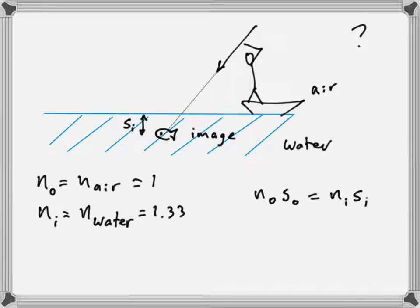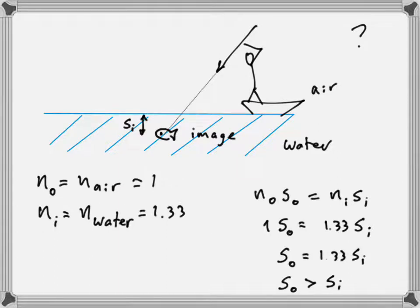Applying the equation n_o × s_o = n_i × s_i, with n_o = 1 and n_i = 1.33, we get: 1 × s_o = 1.33 × s_i. Solving for s_o, the distance to the actual fish, we find s_o = 1.33 × s_i.